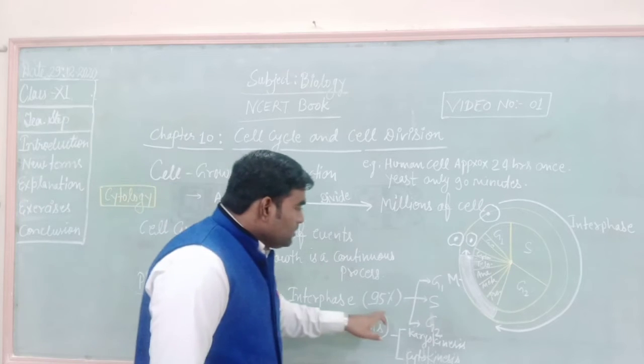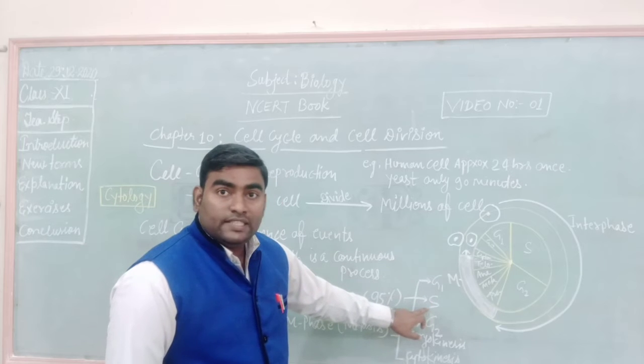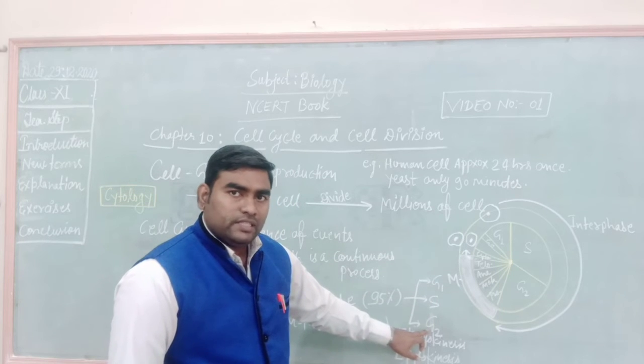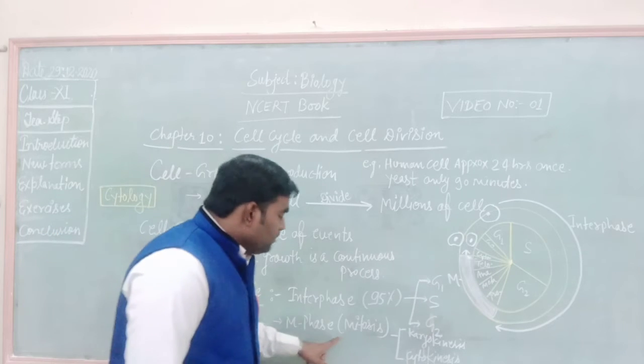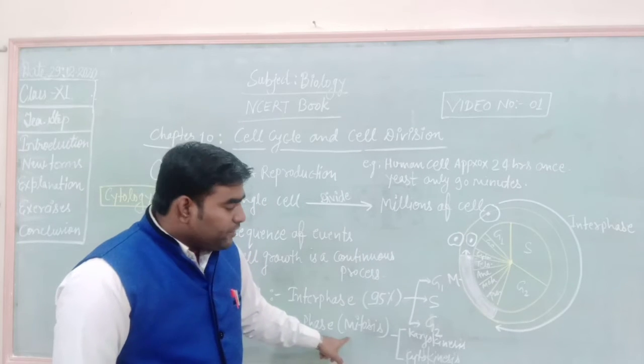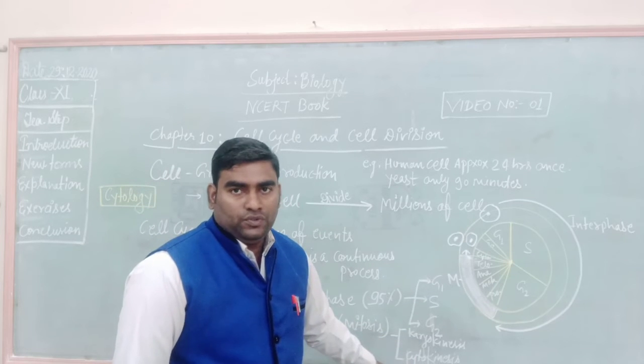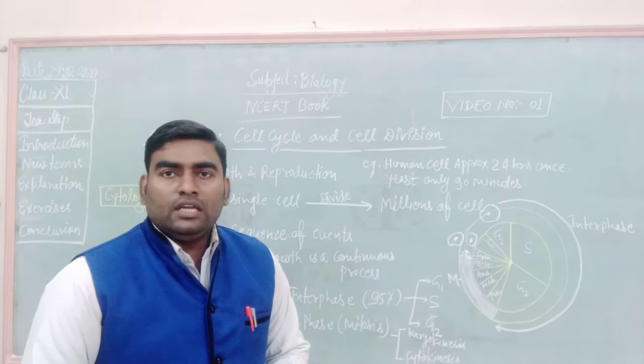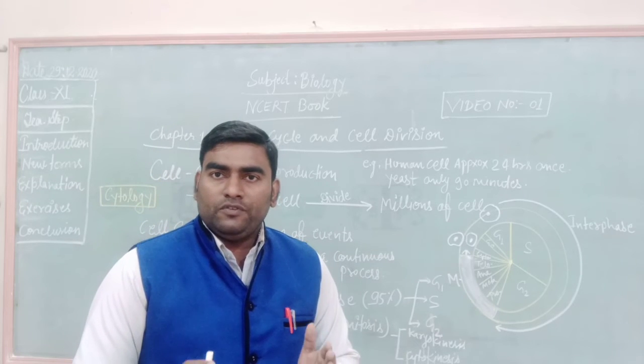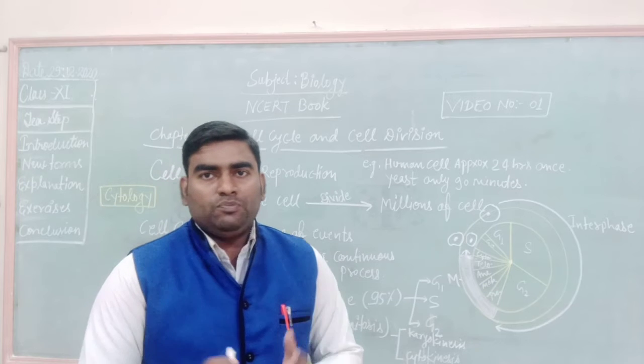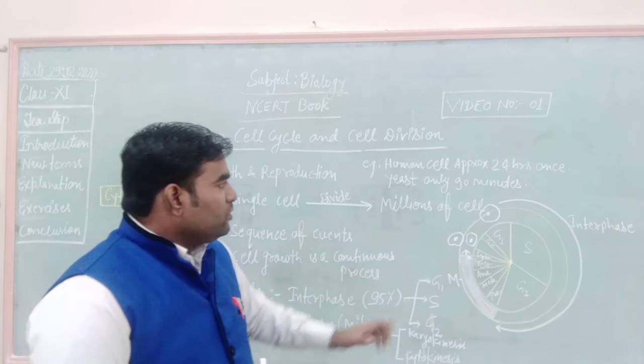And this is divided into G1 growth first phase, S for synthesis phase, and G2 for growth second phase. And in M phase, in the beginning of this phase, it is divided into two parts: karyokinesis and cytokinesis. Karyokinesis means division of nucleus and cytokinesis means division of cytoplasm.